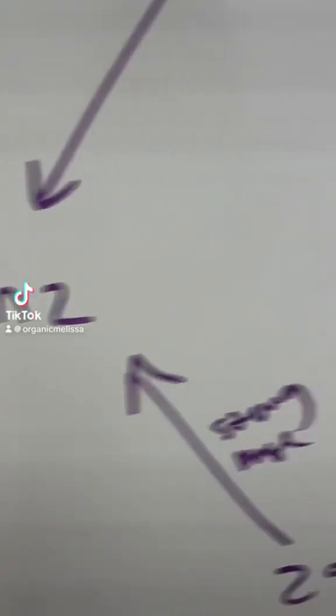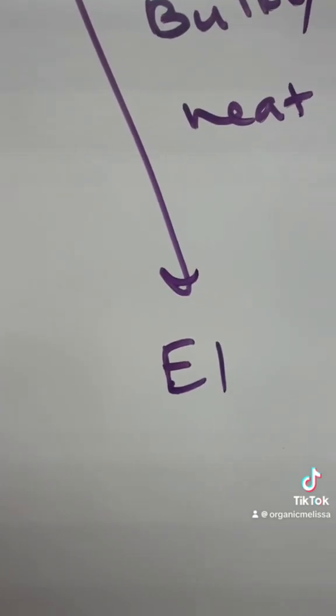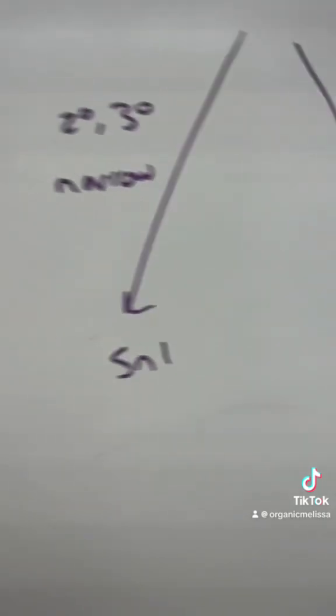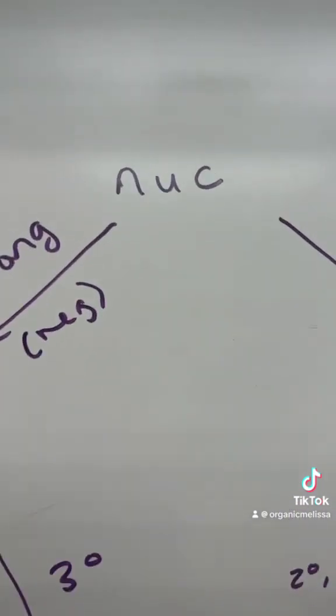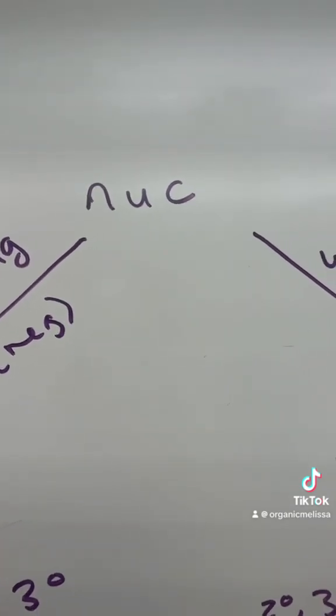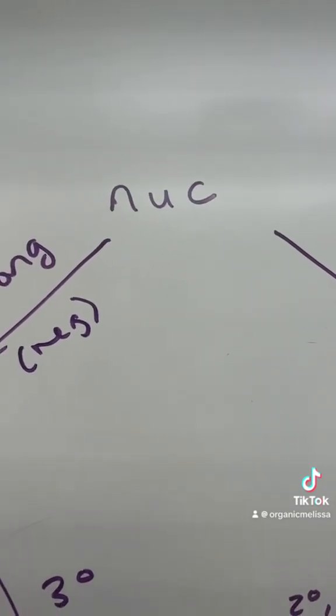Are you struggling to tell between SN2, E2, SN1, and E1? I totally get it. I was really struggling with this for a long time, so I ended up making this chart. Ever since I've used this, it's been so much easier to tell.